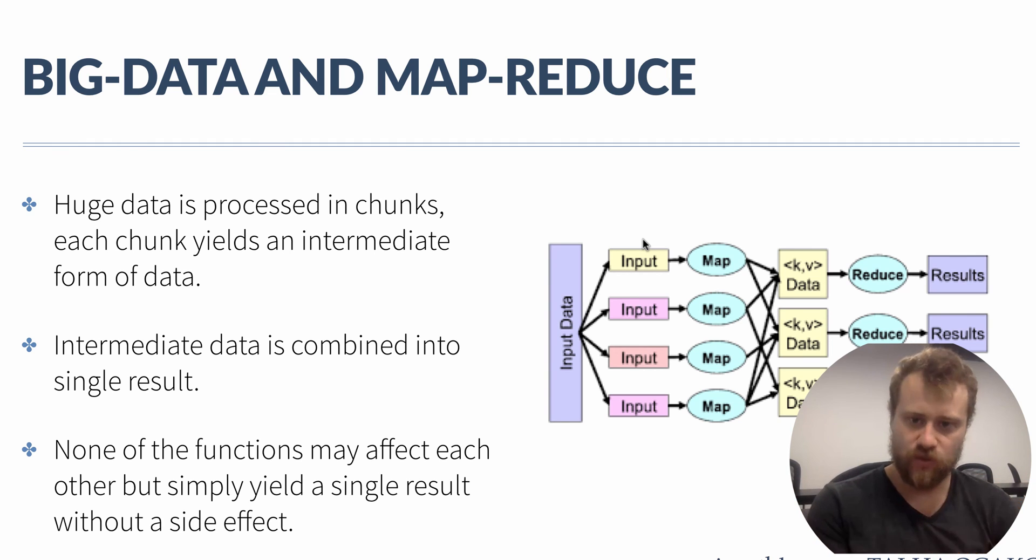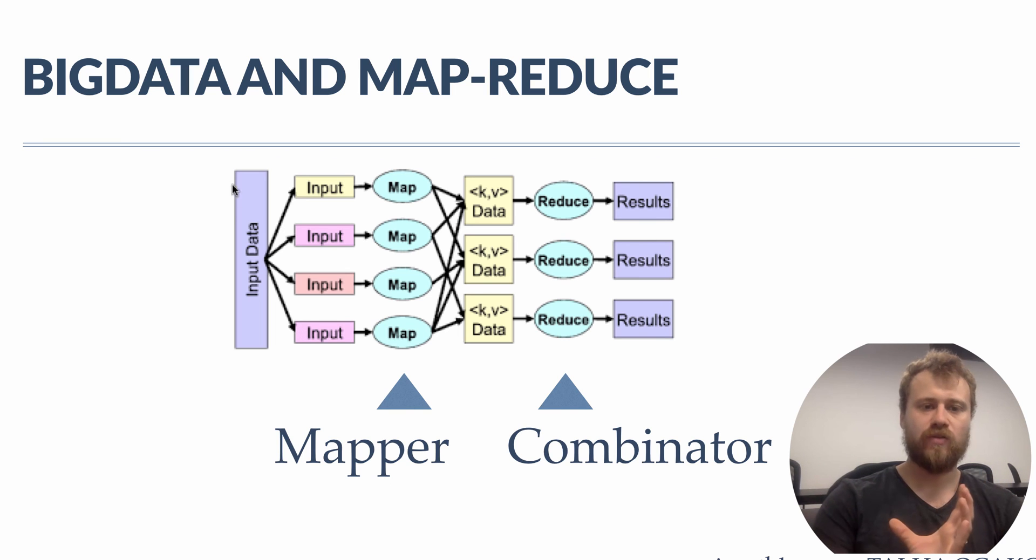That's why Scala had great success for resolving big data problems. So to summarize: we have big data here and we divide them into chunks. Each chunk is mapped to a programming unit function, and each function yields a result without a side effect, without changing a value.